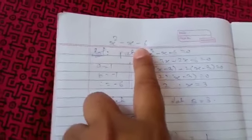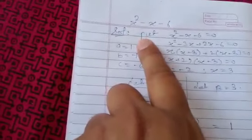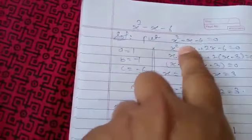Okay, now first we will find zeros of this polynomial. So put the given polynomial equal to 0.